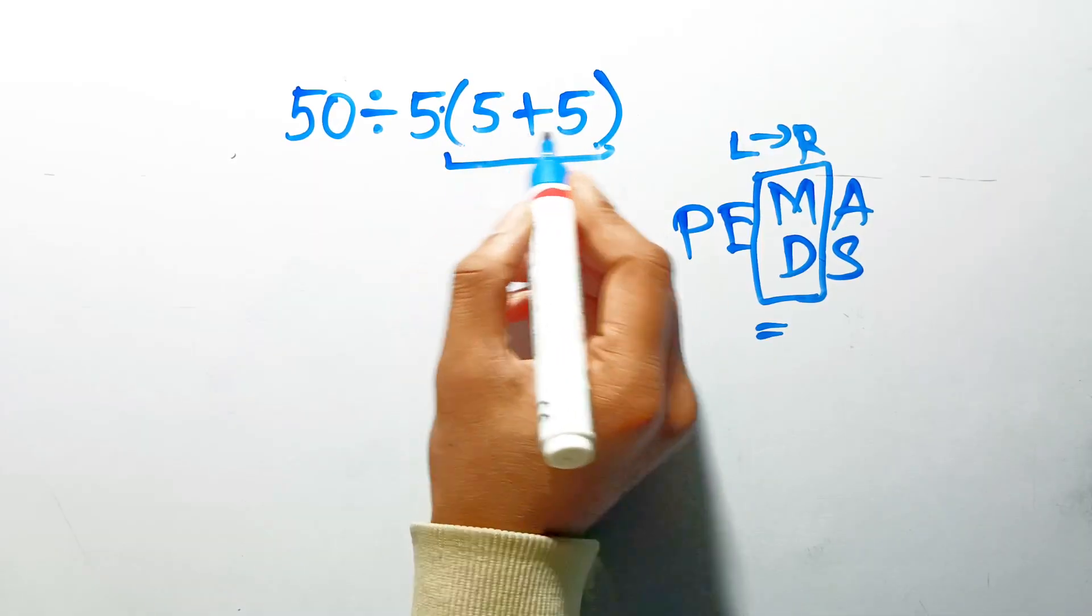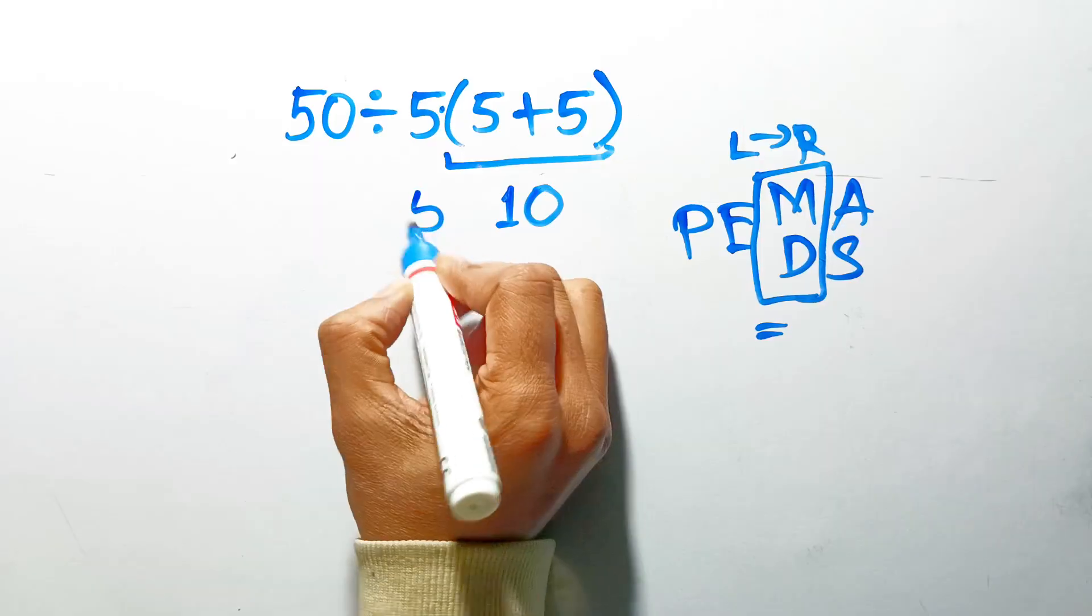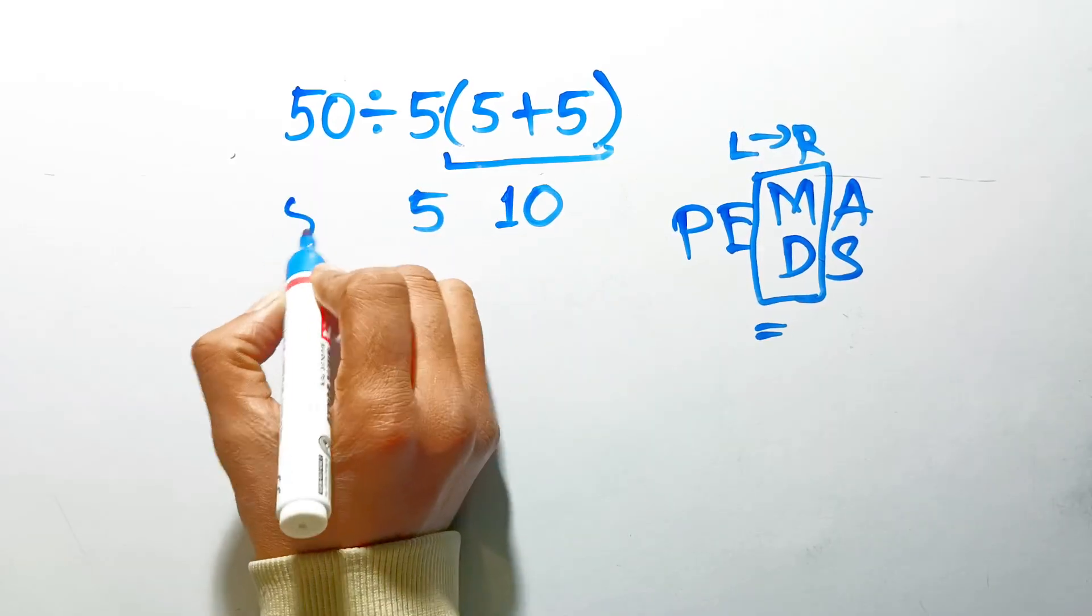Inside this parentheses, we have 5 plus 5, which gives us 10. So we have 50 divided by 5, then times 10.